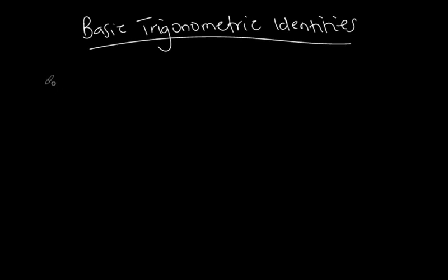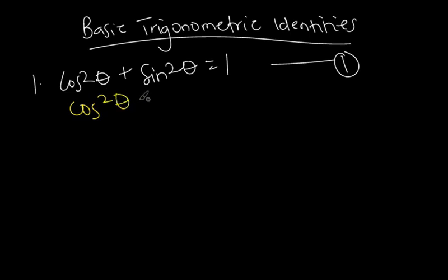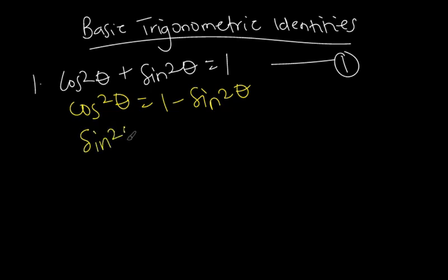The first trigonometric identity we want to look at is cos squared theta plus sin squared theta is equal to one. This is equation number one. From this same equation you can make either cos squared theta or sin squared theta the subject. So you can get cos squared theta equal to one minus sin squared theta, or sin squared theta equal to one minus cos squared theta. These three identities are very useful when we want to prove trigonometric identities.